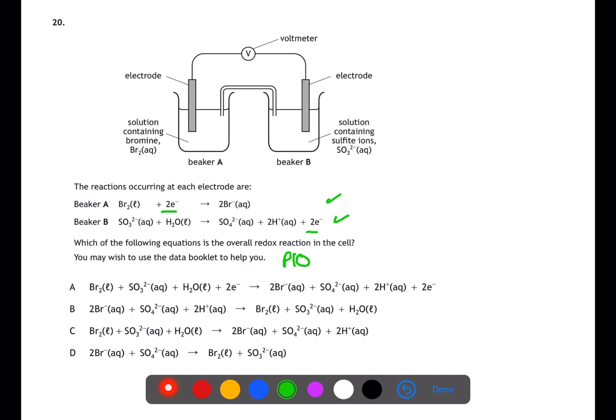You then need to combine the two equations. When you do this, you need to eliminate the electrons. Answer A still has the electrons present and cannot be correct. Answer B has beaker A's equation flipped over, which is incorrect. Answer C is the correct answer. Answer D does not contain the water or hydrogen ions from the sulfite equation, which are required.